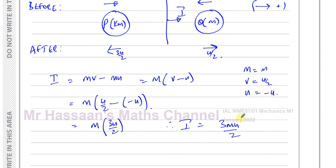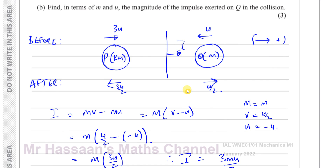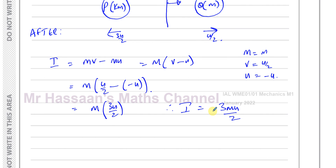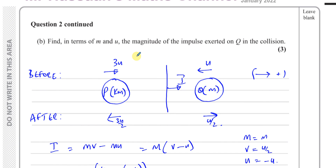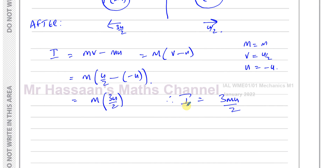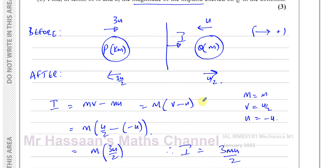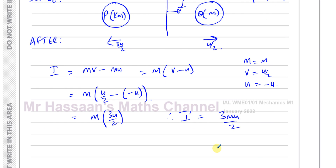If our impulse had turned out negative we would have to write the answer as positive, because it says find the magnitude of the impulse — that's an important point. So the impulse exerted on Q in the collision is 3MU over 2.